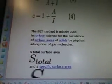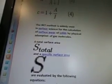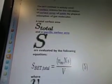The BET method is widely used in surface science for the calculation of surface areas of solids by physical adsorption of gas molecules. A total surface area and a specified surface area are evaluated by the following equations.